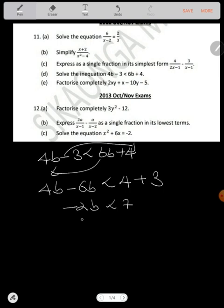So when you subtract you get negative 2b is less than 7. Now what happens? You divide by negative 2. And here your answer will be b. Now as long as what you are dividing here is a negative, your sign changes. It becomes greater than negative 7 over 2. That's your answer.